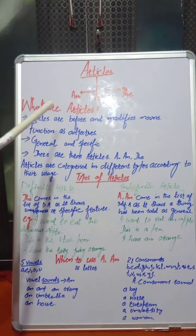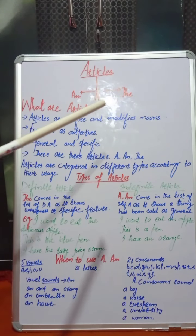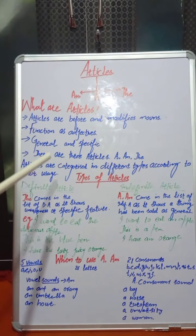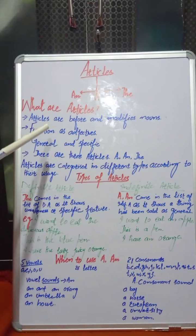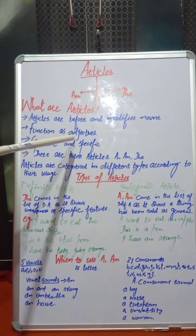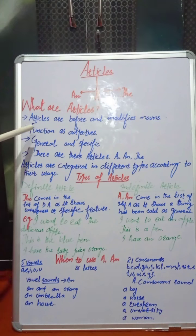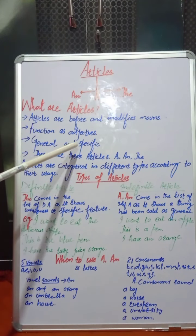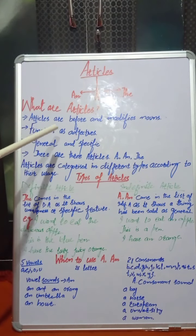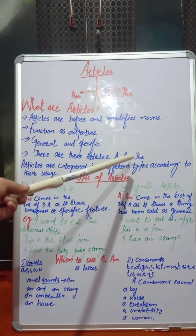What are articles? Articles are the words that are used before nouns, and they also modify the nouns. Articles function as adjectives in a sentence. Articles define whether a noun is used in a specific or general context. And there are three articles: A, AN, and THE.